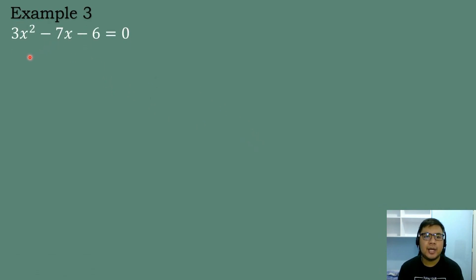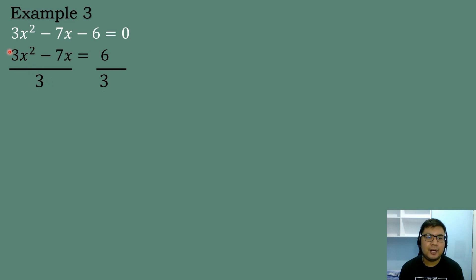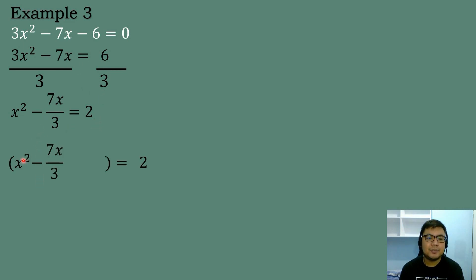For the next problem, we have 3x squared minus 7x minus 6 equals 0. Since the numerical coefficient of the quadratic term is greater than 1, we divide both sides by 3. So 3x squared becomes x squared, and we have x squared minus 7x over 3 equals 2. Then we place an open parenthesis with x squared minus 7x over 3 and a blank. The numerical coefficient of the linear term is negative 7 over 3. Dividing by 2 and squaring gives 49 over 36.